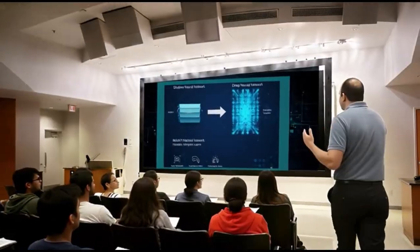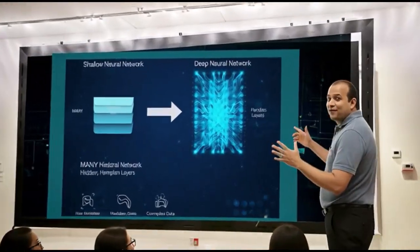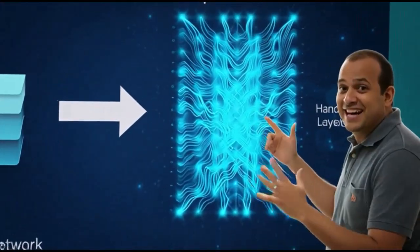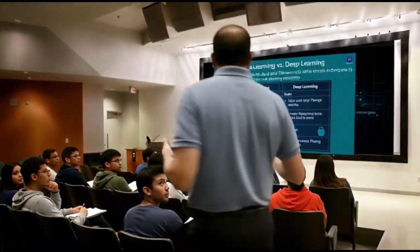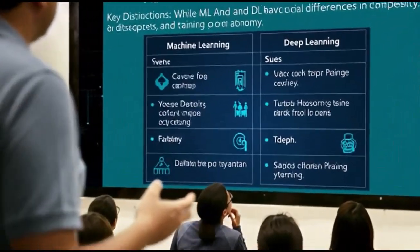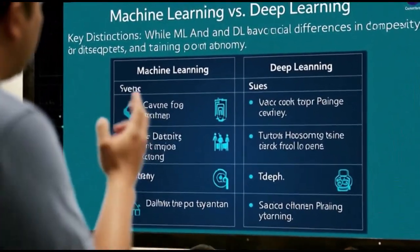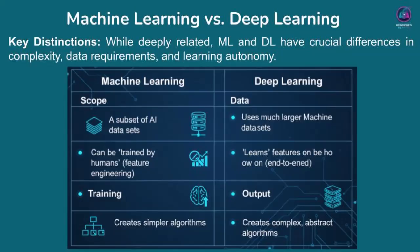On this slide, we're taking a closer look at the distinctions between machine learning and deep learning. While deep learning is technically a subset of machine learning, it's helpful to understand their key differences as they have distinct characteristics and applications.